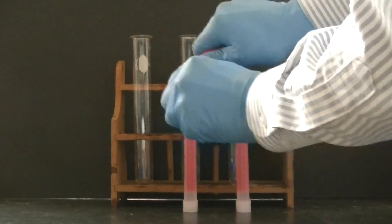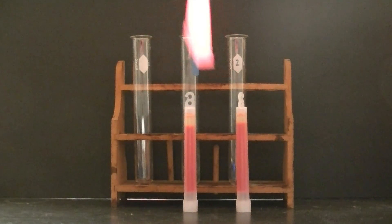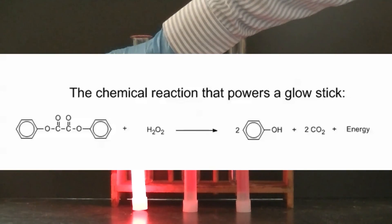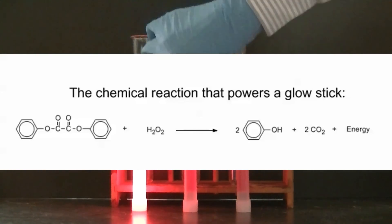When a light stick is snapped, there are chemicals inside the light stick that are mixed, and when those chemicals are mixed, they undergo a chemical reaction.